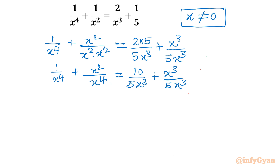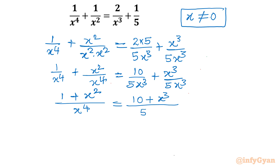Now let's take LCM on both sides. So we get: (1 + x²) divided by x⁴ equals (10 + x³) divided by 5x³. Now I will cancel whatever I can — in the denominator I can cancel x³, leaving just x.